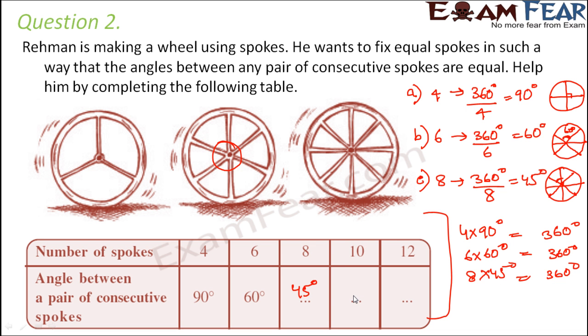So with this relationship you can easily find out this value because 10 into this value is equal to 360. So this value would be 360 divided by 10, that is 36. Similarly, 12 into this value is 360. So this value would be 360 divided by 12 which is 30 degree.